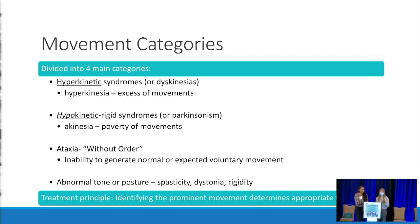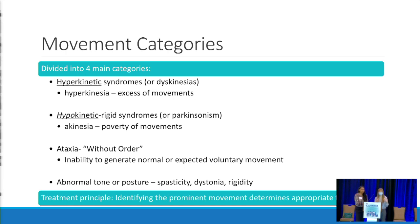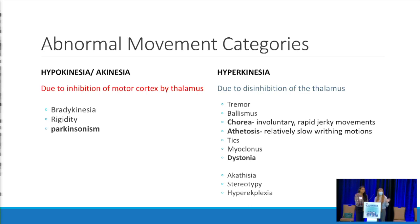For the movement categories, we divide them into four main groups. Hyperkinetic means too much movement. Hypokinetic means too little movement, causing poverty of movement — like when people with Parkinson's are slow and stiff. Ataxia is a general term for unbalanced, all over the place movement. And then we have abnormal tone or posture: spasticity from stroke-type tone, dystonia which is a fixed muscle movement, and rigidity which is a different kind of stiffness. The best way to figure out what type of movement or tone someone has is by feeling and moving them, then treating based on the actual problem.